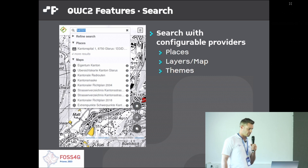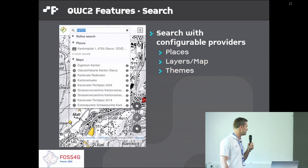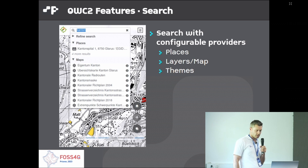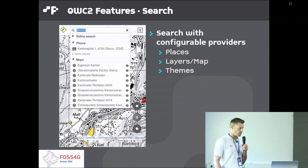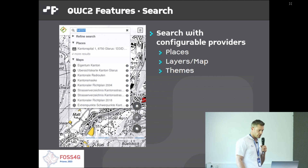The search function generically allows you to get results for places, layers, maps, and scenes. You can implement your own search function through JavaScript to interact with any search backend you wish, or you can use the full text search service to search on the data of the QGIS project.